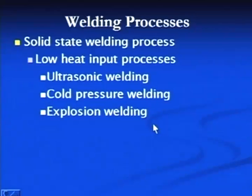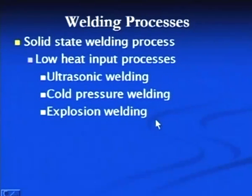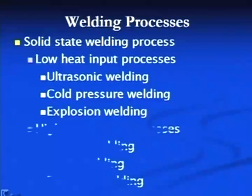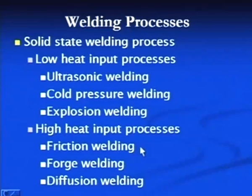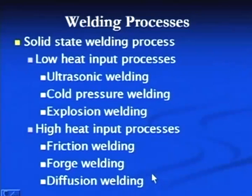Mainly localized plastic deformation of the metal at the interface takes place in these welding processes, which is responsible for producing the joint. High heat input solid state welding processes in which melting does not take place but significant heating occurs include friction welding, forge welding, and diffusion welding.